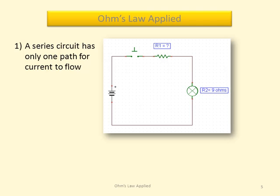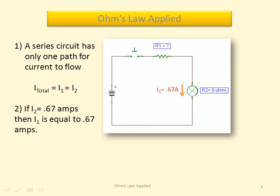A series circuit has only one path for current to flow. I total is equal to I1 is equal to I2. If I2 equals 0.67 amps, then I1 is equal to 0.67 amps.